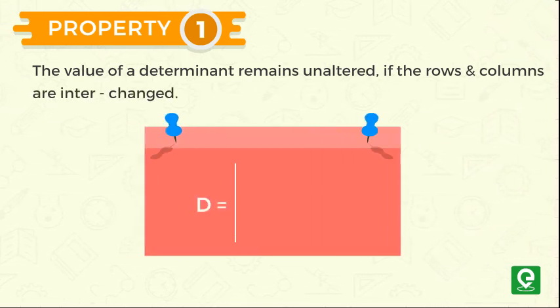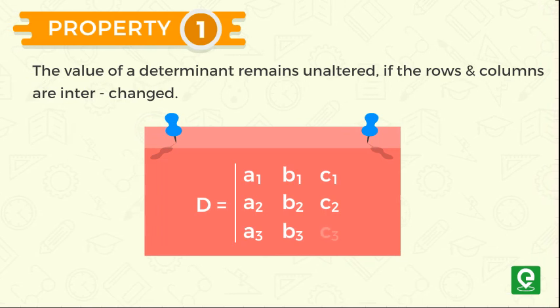a determinant D is equal to a1, b1, c1, a2, b2, c2, a3, b3, c3.